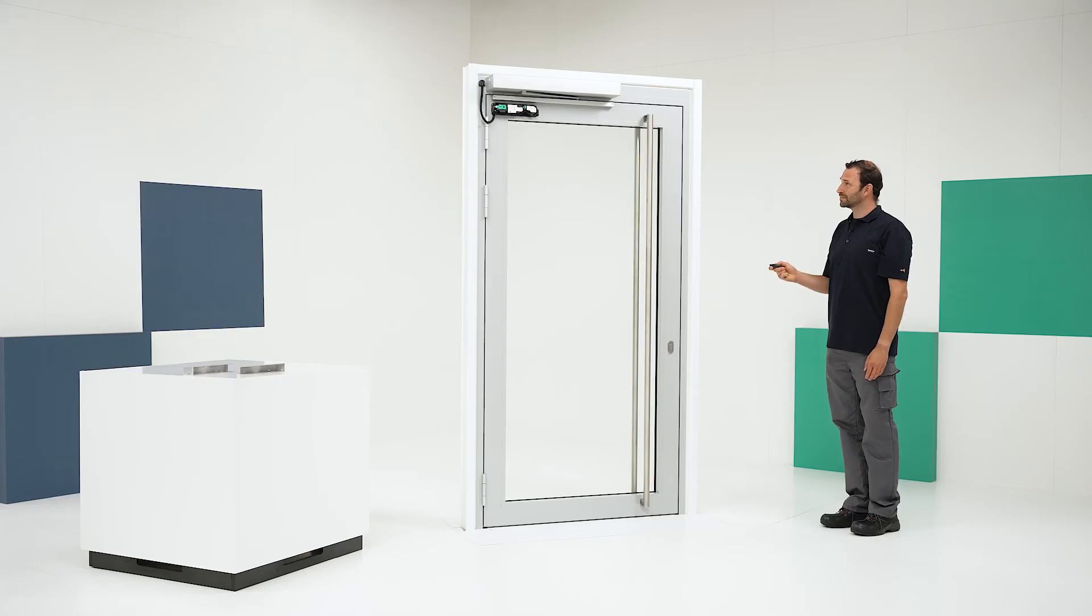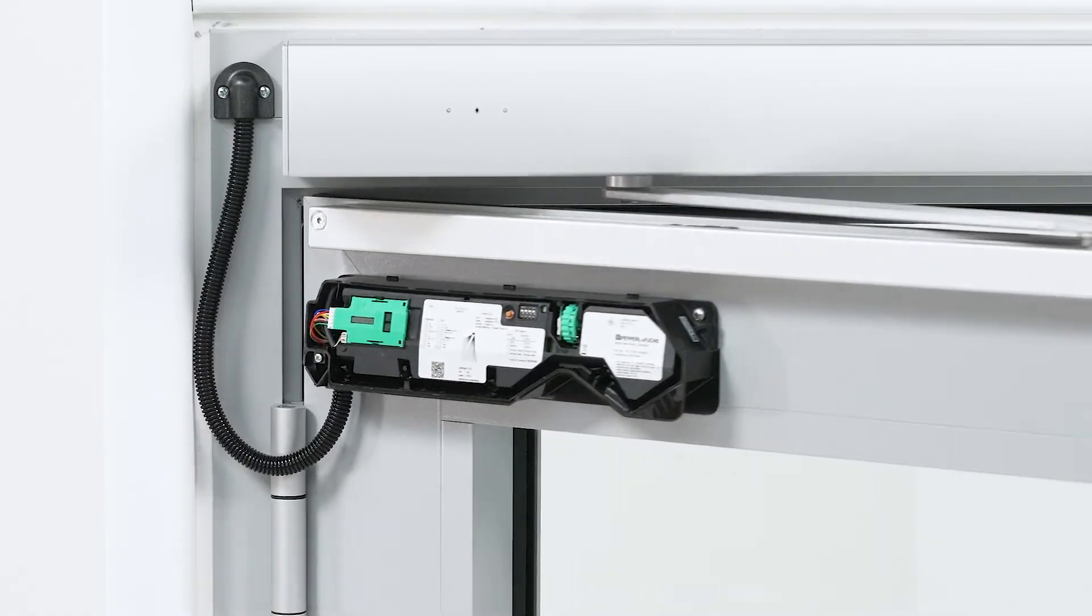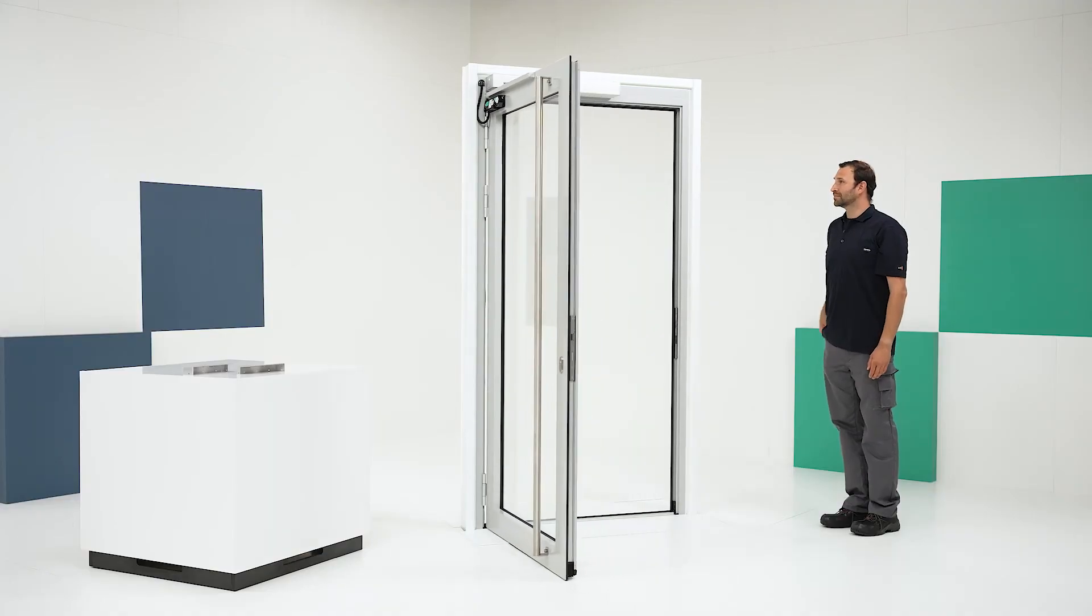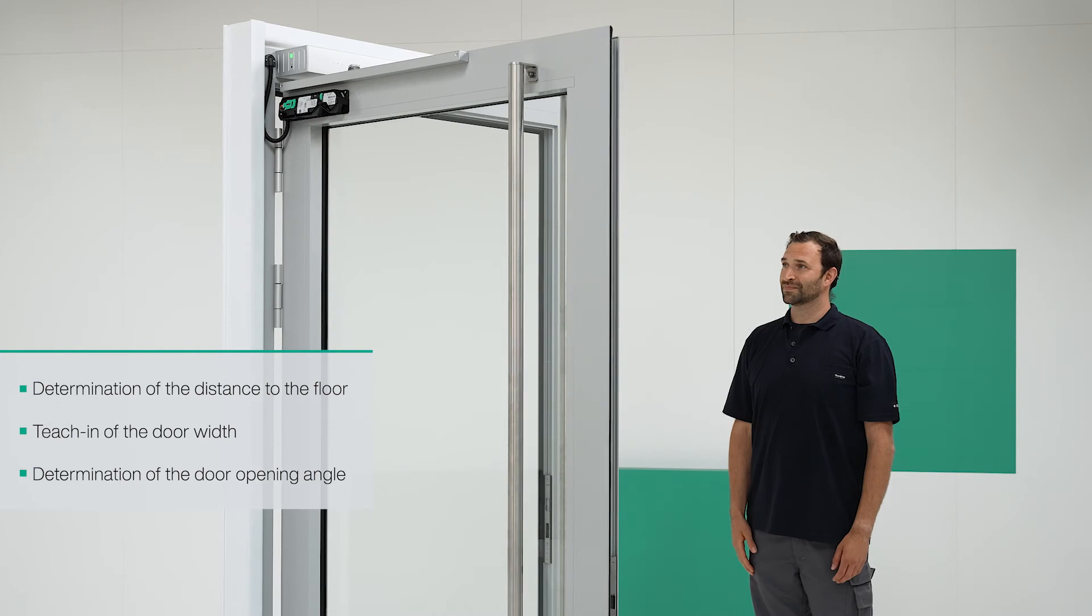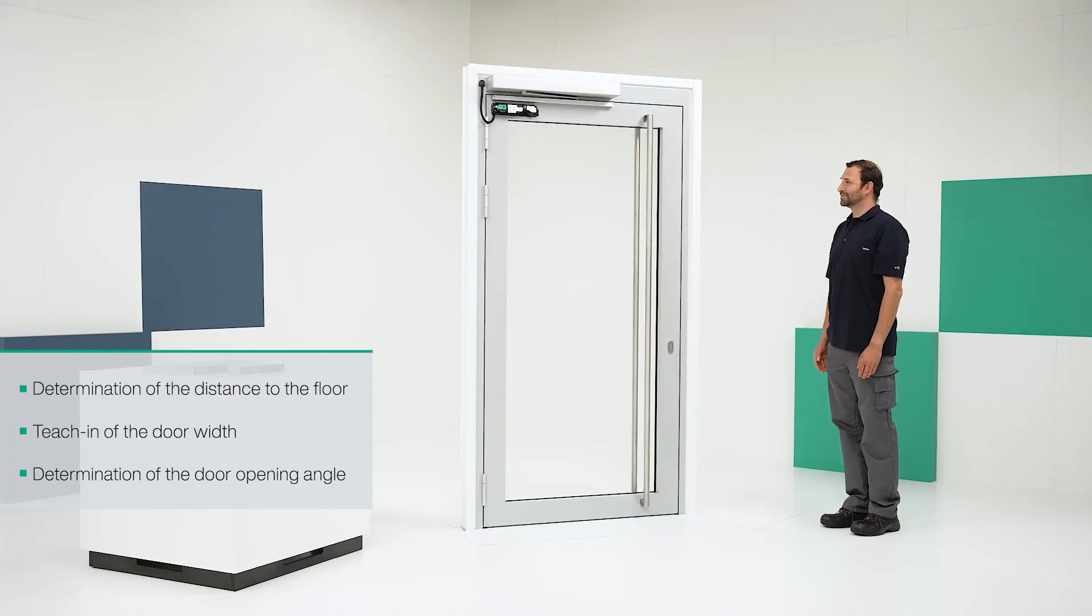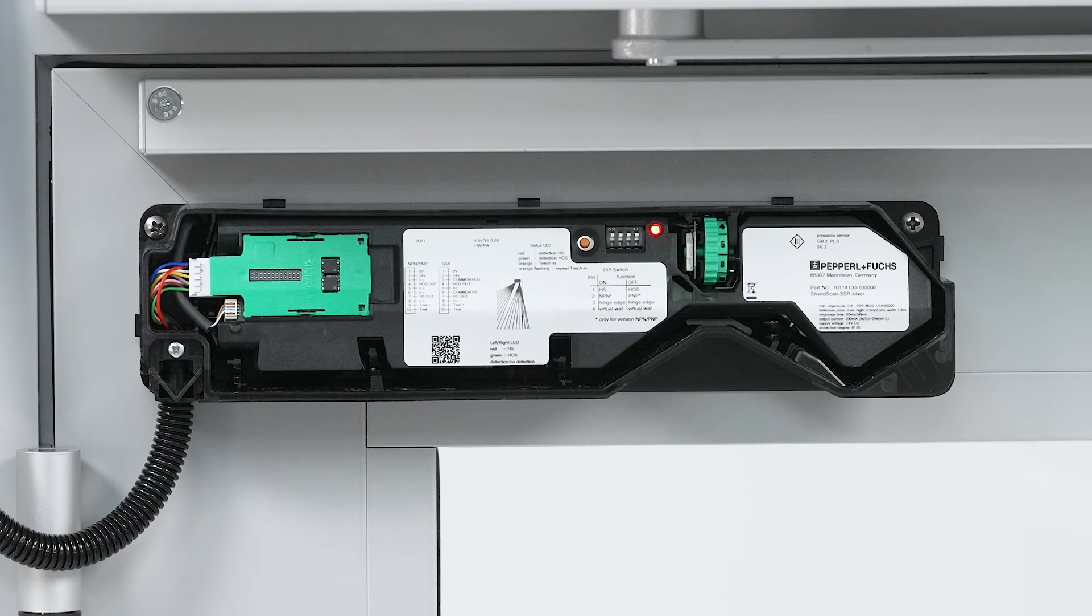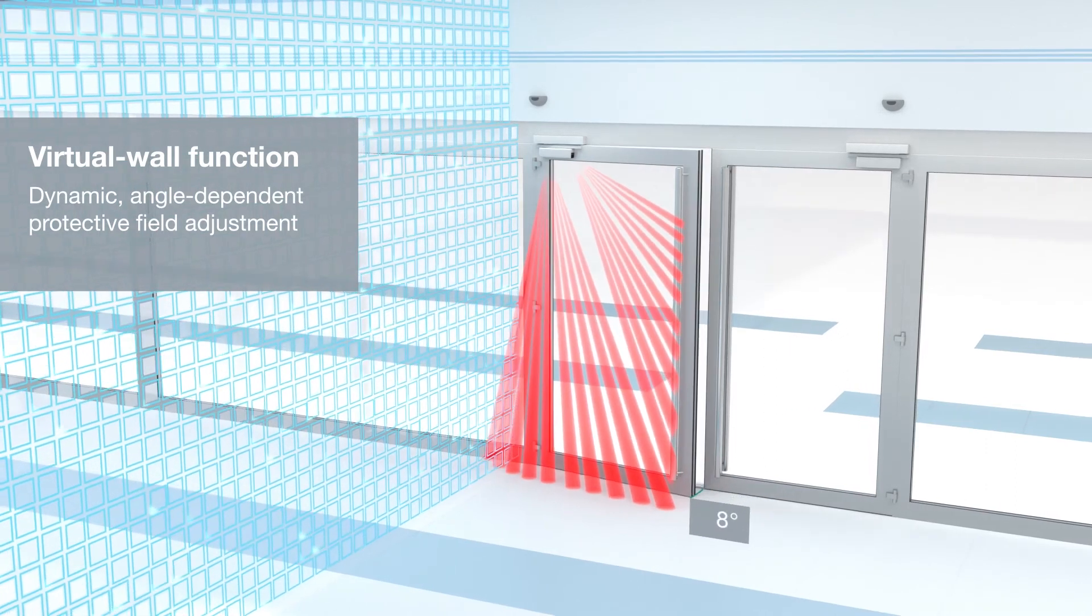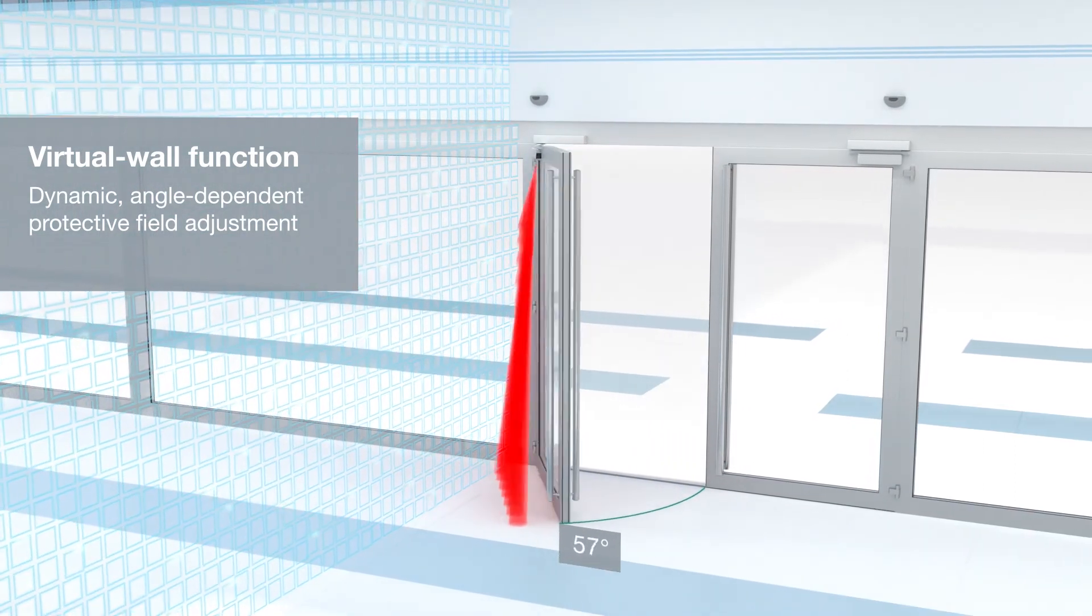Now it's time to start the door movement. The door opening angle is learned while the door is being opened. The status LED will flash green when this process is complete. As the door is closing, the status LED will flash red. When all the LEDs go out, this means the teach-in process has been completed successfully. The sensor system is now ready for operation and virtual wall suppression is activated.